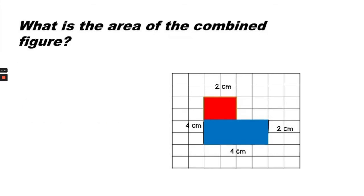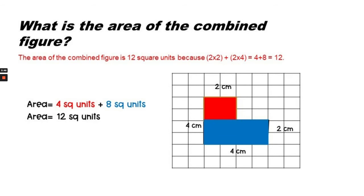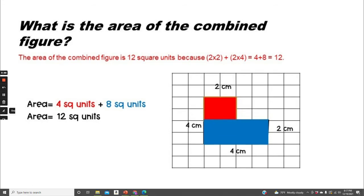So, what is the area of the whole figure or the combined figure? The area of the square units is 4 square units plus 8 square units equals 12 square units.